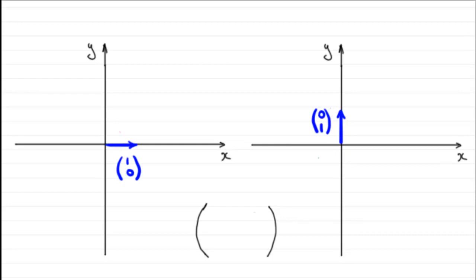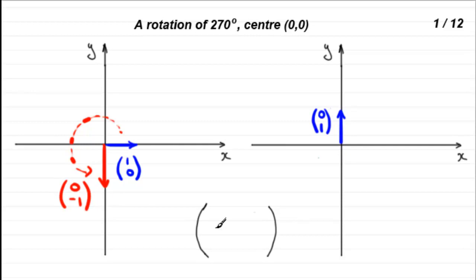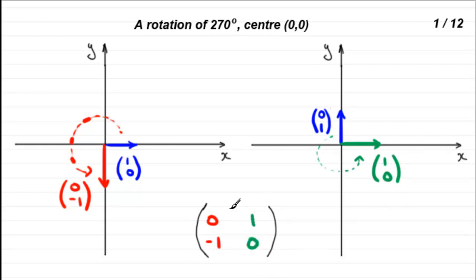For the first transformation, we've got a rotation of 270 degrees, centre 0, 0. I just need to think about where each vector moves to. The vector (1, 0) turns anti-clockwise 270 degrees about the origin to end up downwards — that's the vector (0, −1). Then we take (0, 1) and turn it 270 degrees, which ends up at (1, 0). So the matrix has columns (0, −1) and (1, 0).